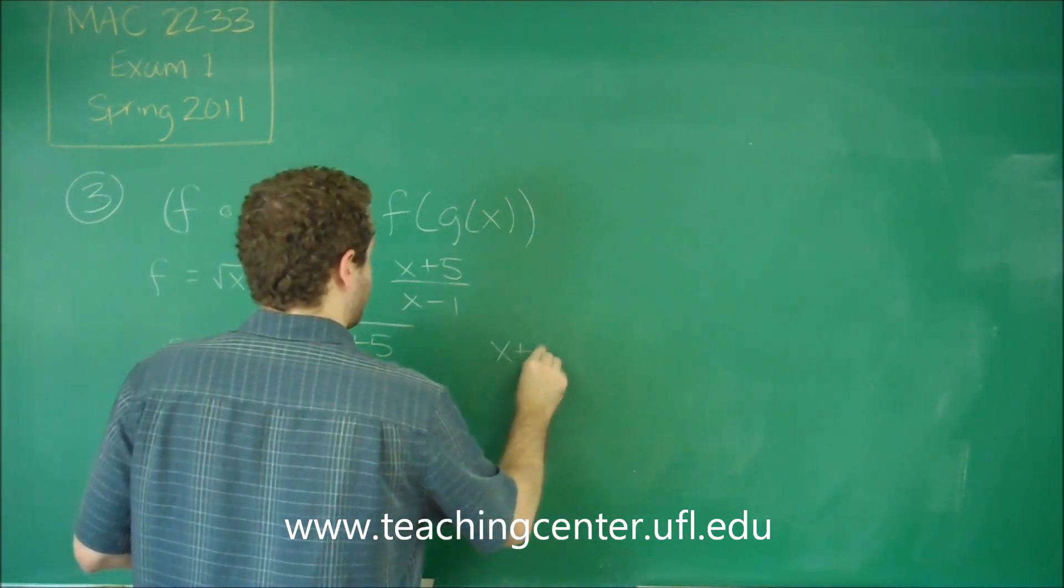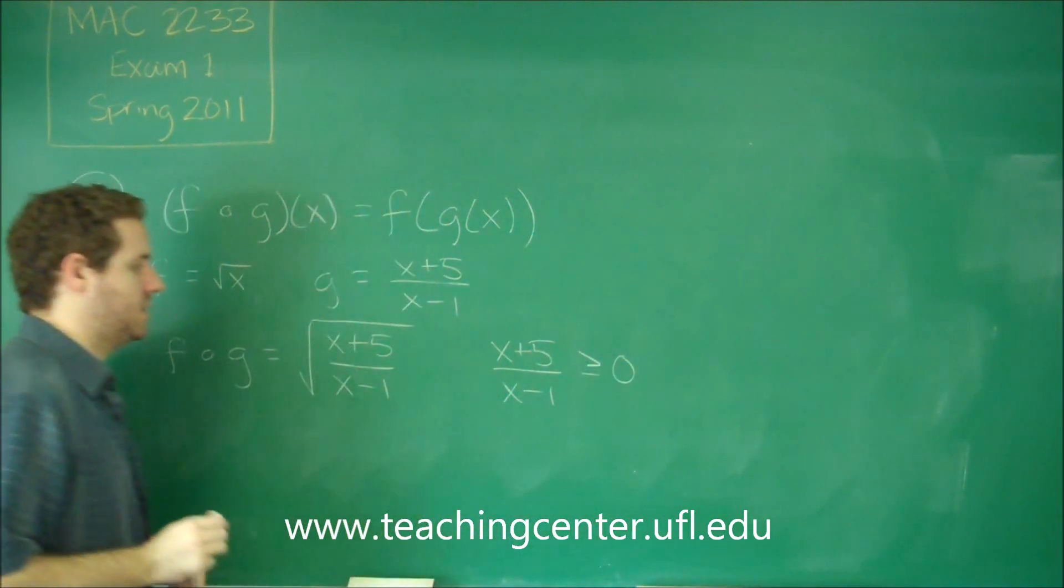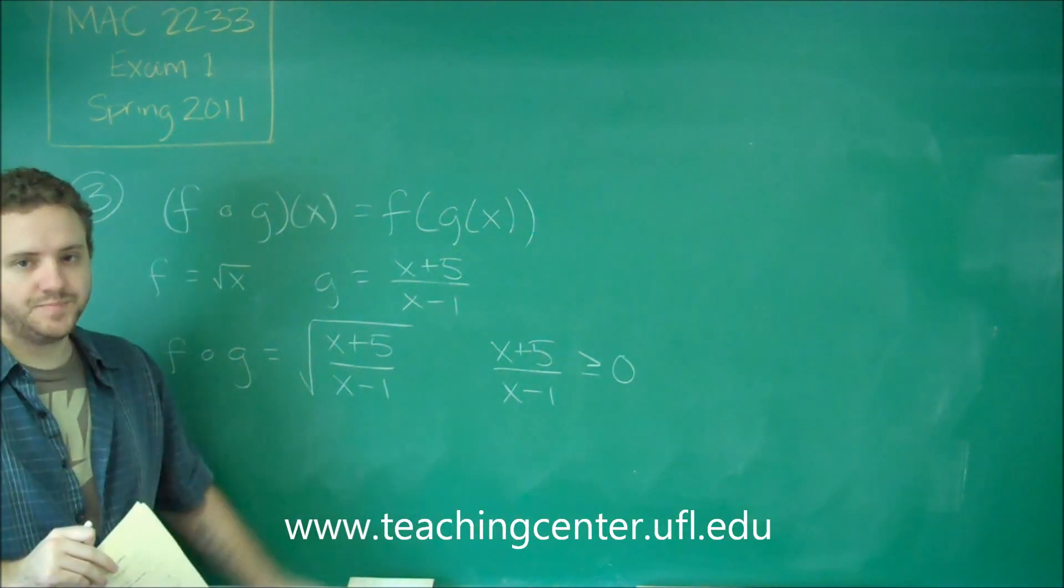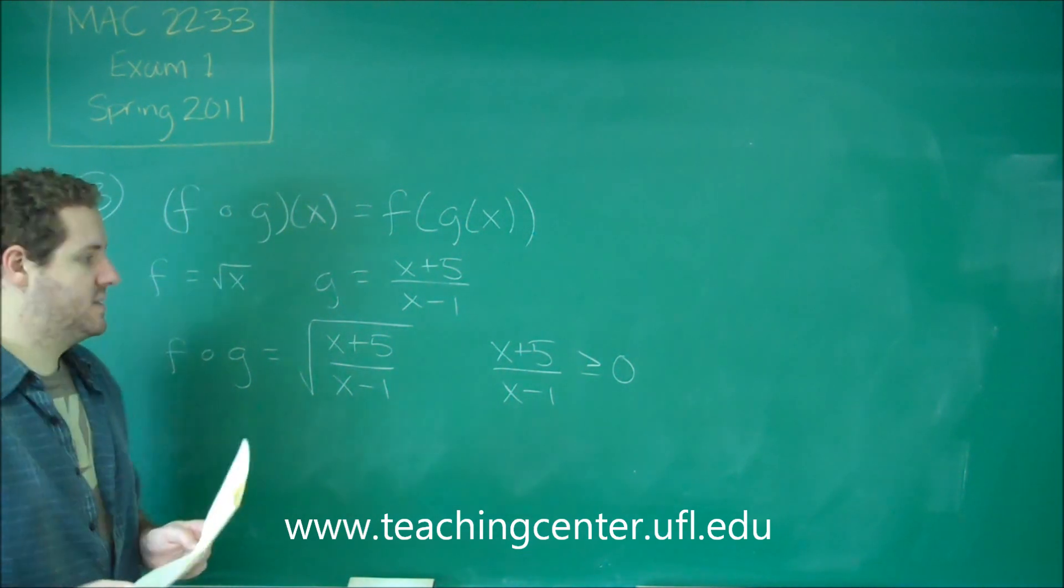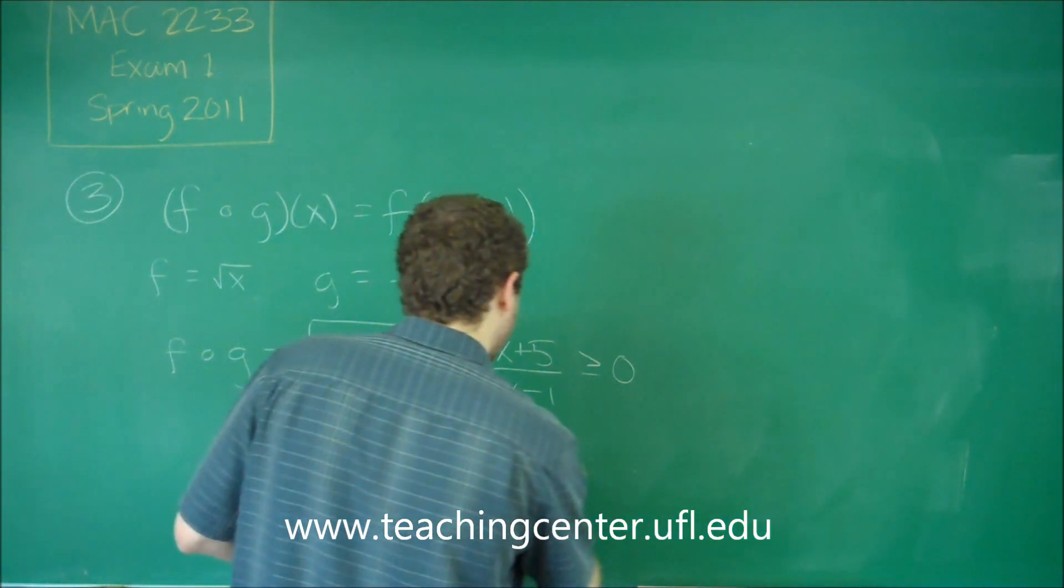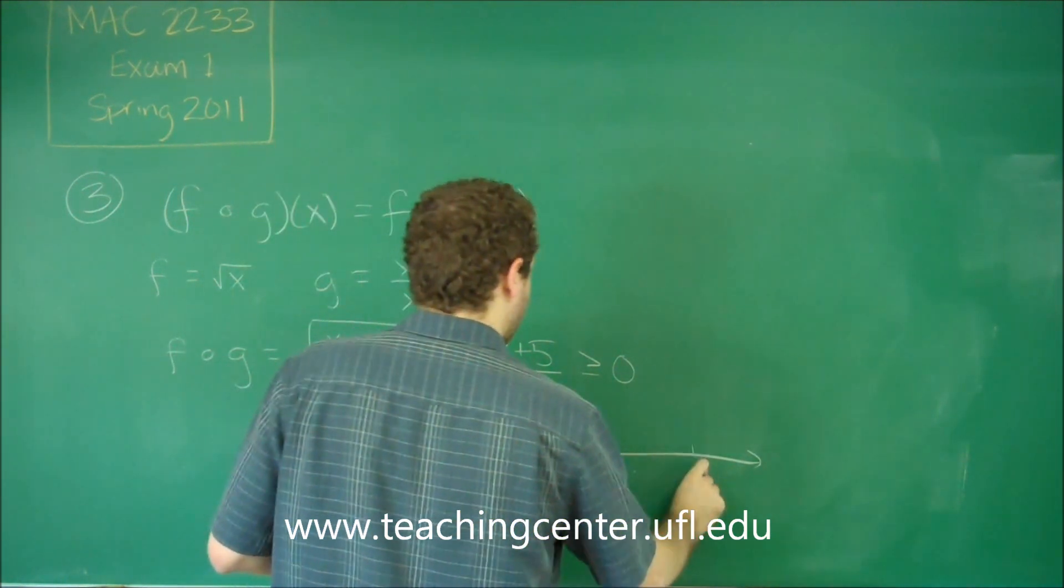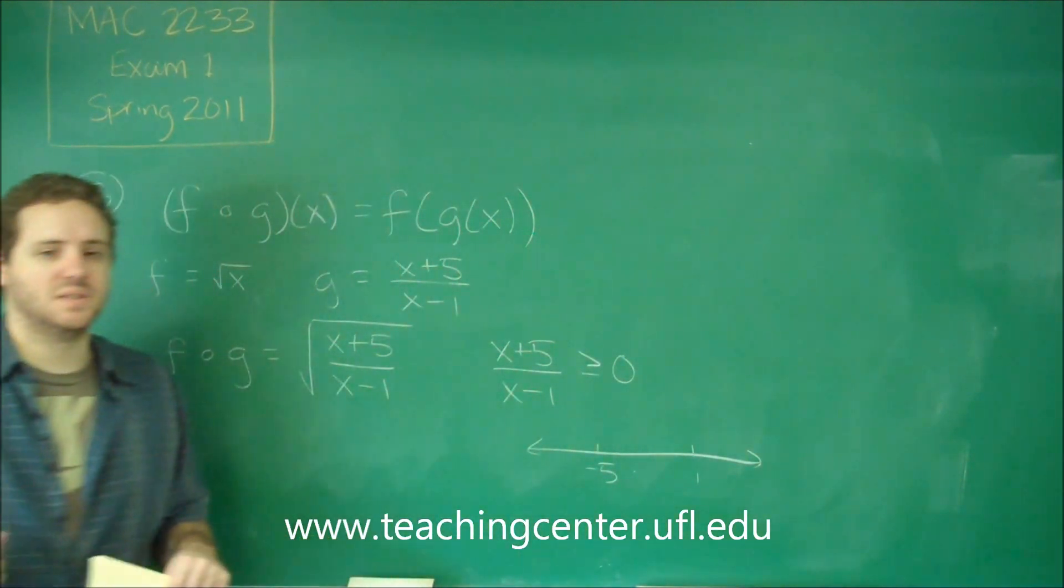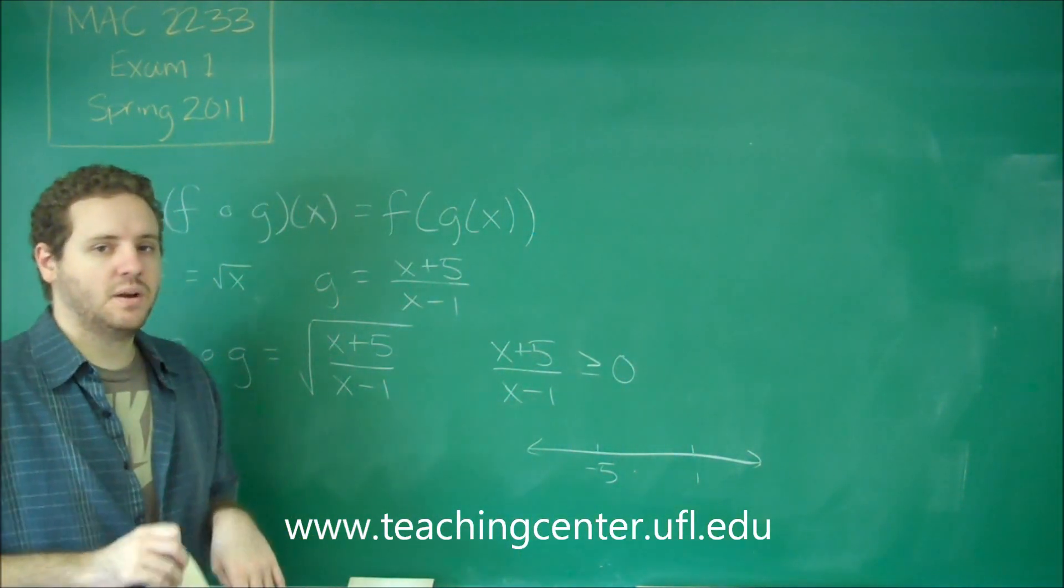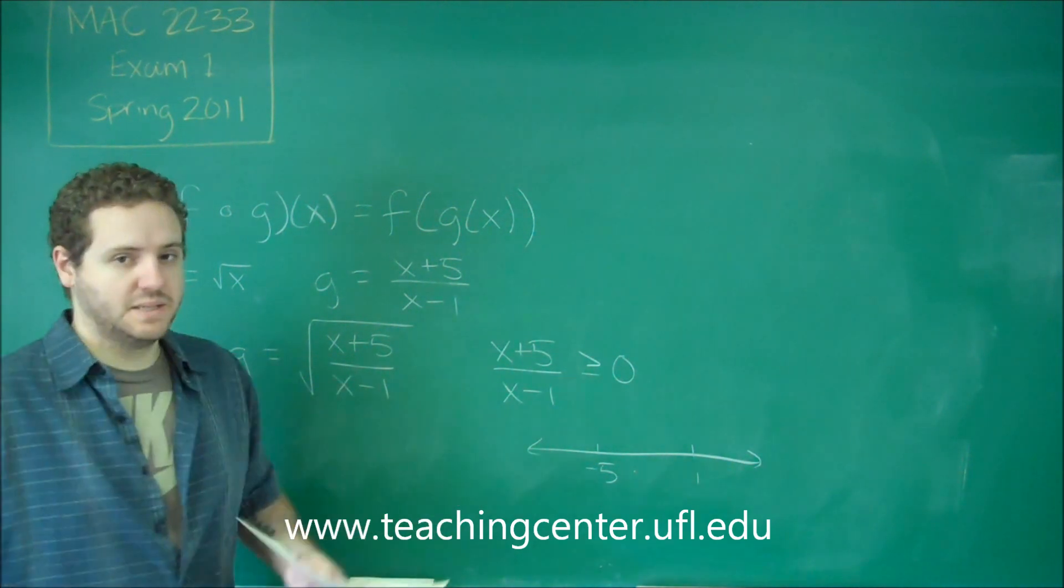We know that x plus five over x minus one has to be greater than or equal to zero because it's in the square root. So we do a similar thing that we did for number one. We can set up a number line now. And our key points this time are one and negative five because those are the zeros of the numerator and denominator. All we need to do now is check our ranges to see if we get a positive or negative result.